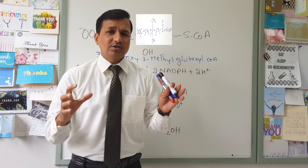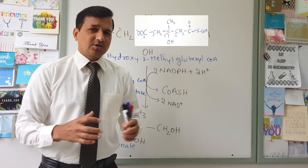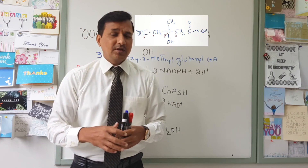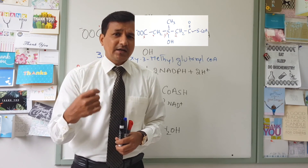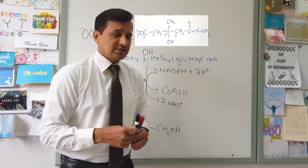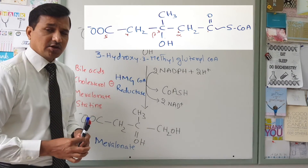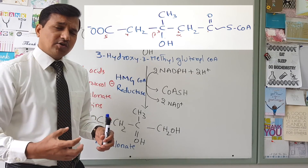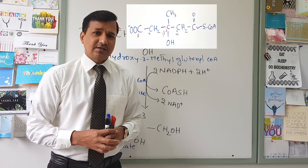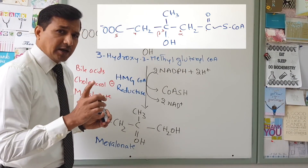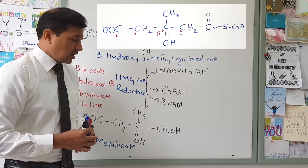The regulation on HMG-CoA reductase can be by allosteric modulators, by hormonal regulation, or by protein degradation. Regarding allosteric modulation: whenever there is more cholesterol present in the hepatocytes, cholesterol will have a feedback negative effect on HMG-CoA reductase. One of the cholesterol derivatives in the liver is bile acids, and whenever there is excess bile acids, they also will have a negative effect on HMG-CoA reductase.